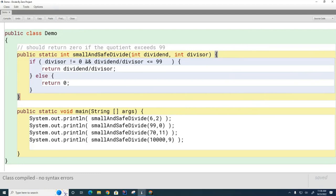So if the divisor comes out to be zero, this IF statement is abandoned and the ELSE clause is executed instead.